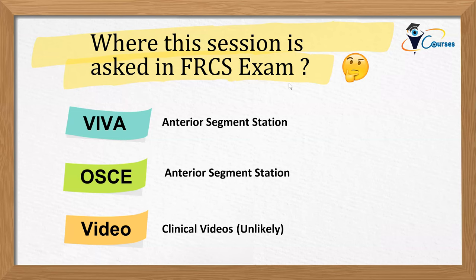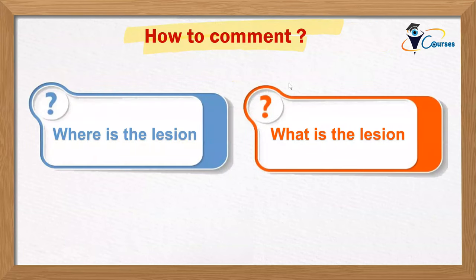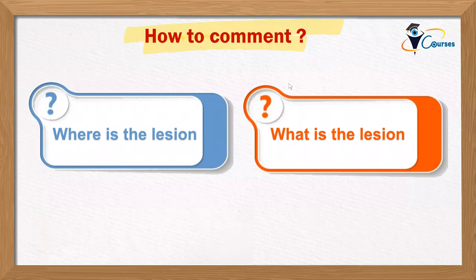When thinking about the cornea, use the same approach as in neuro-ophthalmology: ask 'where is the lesion?' and 'what is the lesion?' These are the questions that will give you a clue about the diagnosis. If you know the anatomical level of the lesion in the cornea, and you know the character of the lesion, by combining these two pieces of data you will reach a diagnosis.